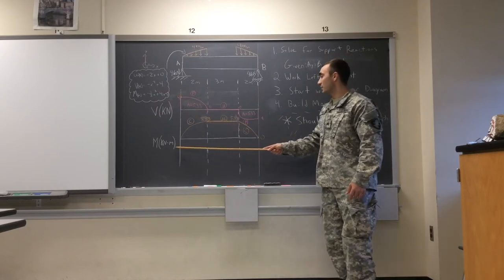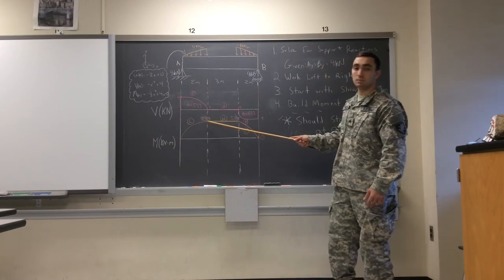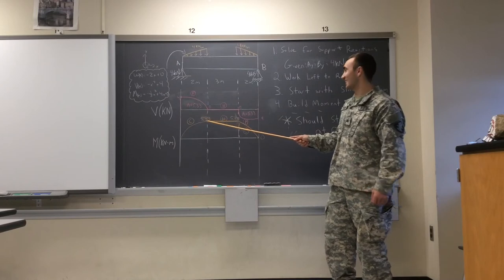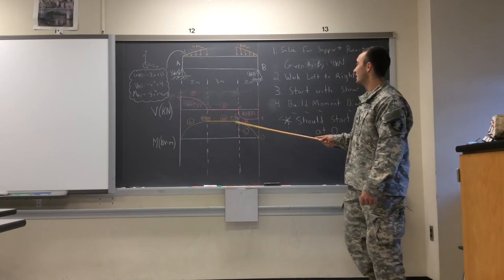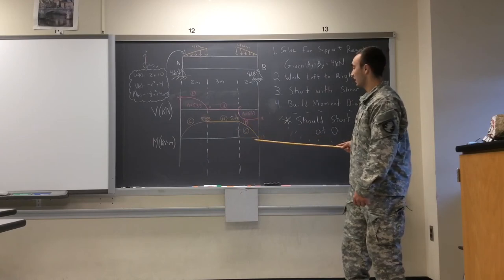Now, we move on to the moment diagram. We already saw for this first part right here, there's no moments affecting from this ramp load to the next. And they're symmetrical. So, this one is also going to be 5.33 to bring it back down to zero.